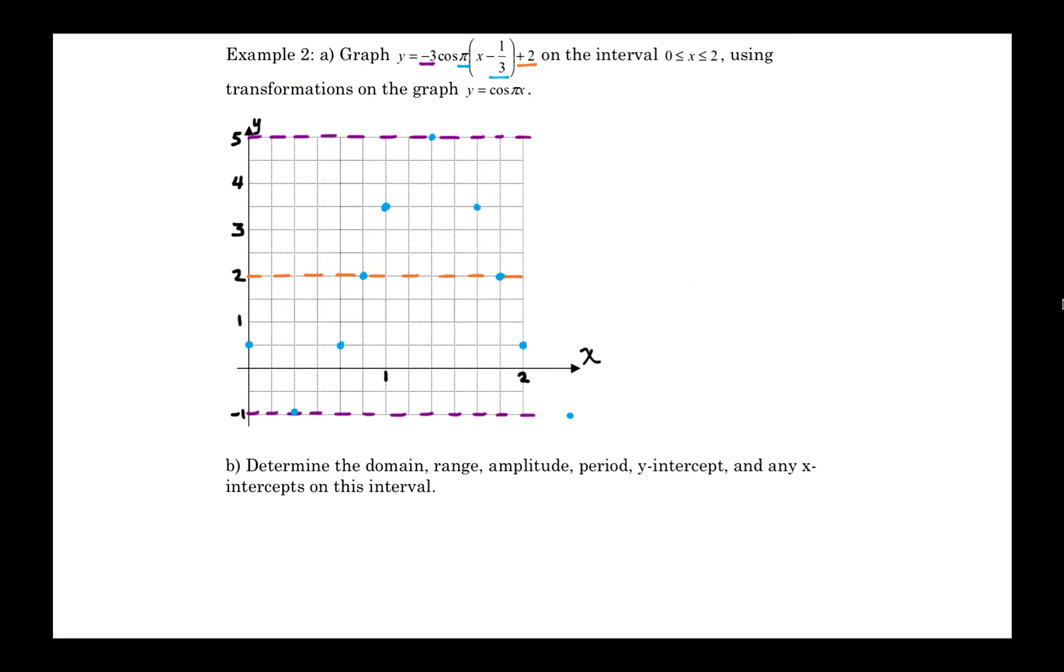So now if I connect these points together with a nice smooth curve, put arrows on the ends to indicate that the relation does continue on from here. The function does continue on from here. And that gives me a picture of what this looks like. Now, next we want to talk about all these features.